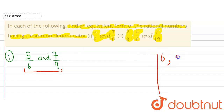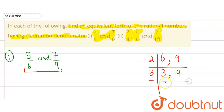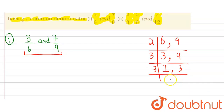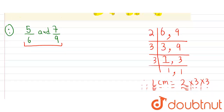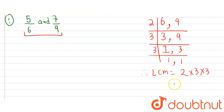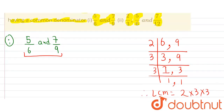For LCM of six and nine: take the smallest prime factor two — we get three and nine. Take three — we get one and three. Take three again — we get one and one. Therefore LCM is two into three into three, which is two into three equals six, and six into three equals 18. Therefore LCM is 18.